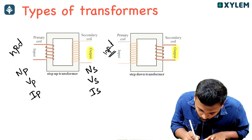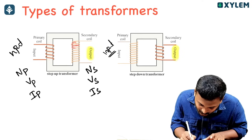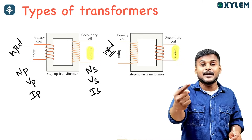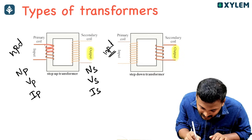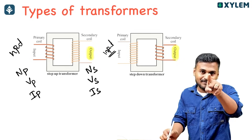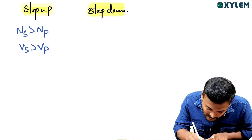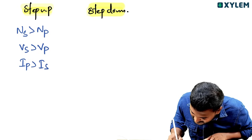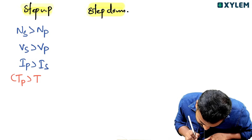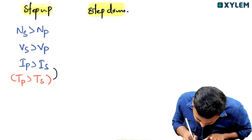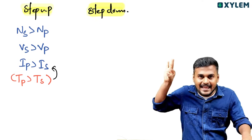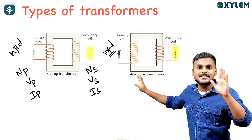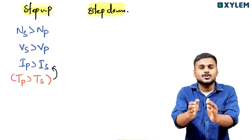In a step-up transformer, the primary coil is thicker. Current Ip is greater than Is. The area of cross section determines thickness. Primary coil is thicker because current in primary is greater. Secondary is thinner. These are the properties of step-up transformers.